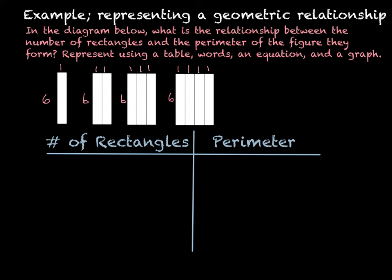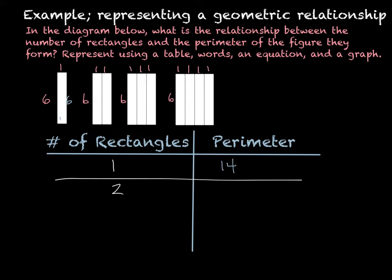Starting the table: if we have one rectangle, the perimeter is adding everything around the outside. This would be one on each short side and six on each long side, so six plus six is twelve, plus one plus one is fourteen. So our perimeter is fourteen. When there are two rectangles, we still have six and six — that's twelve — plus two on top and two on bottom, which makes sixteen.